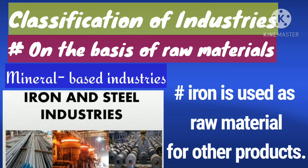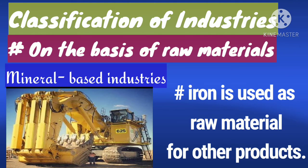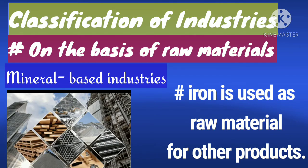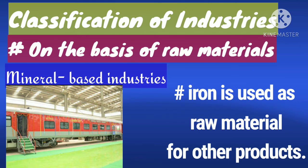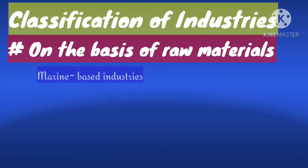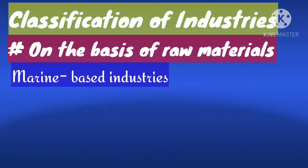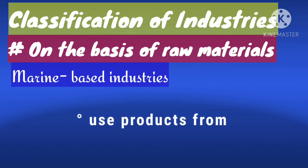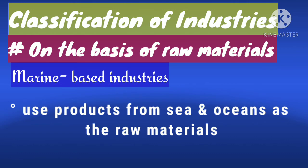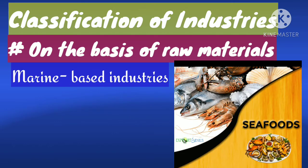The third category is marine-based industries. These industries use products from seas and oceans as raw materials — for example, industries processing seafood and manufacturing fish oil.